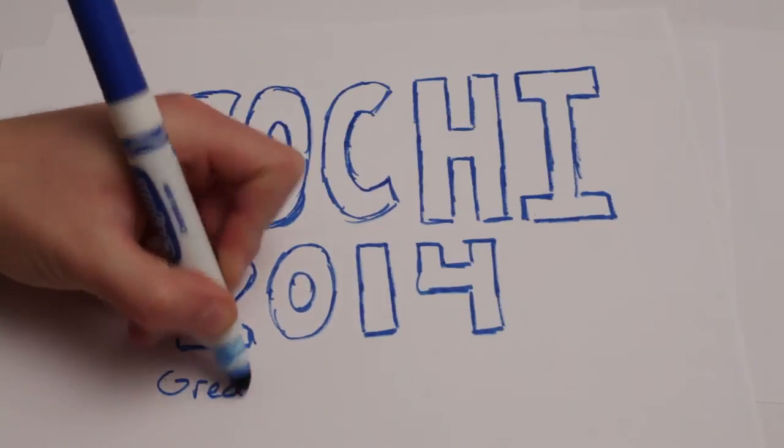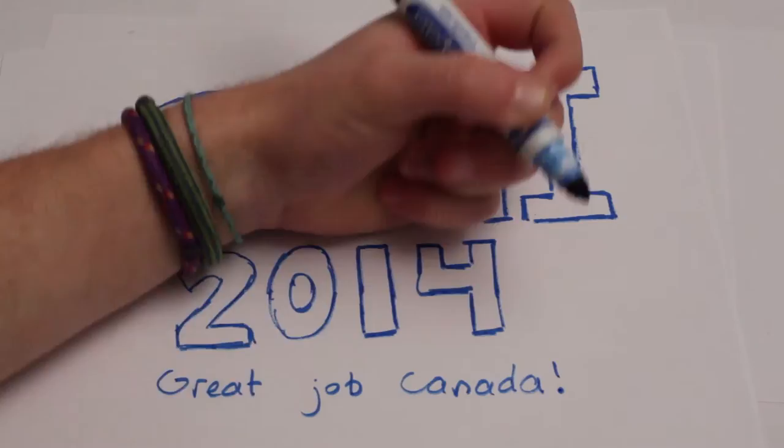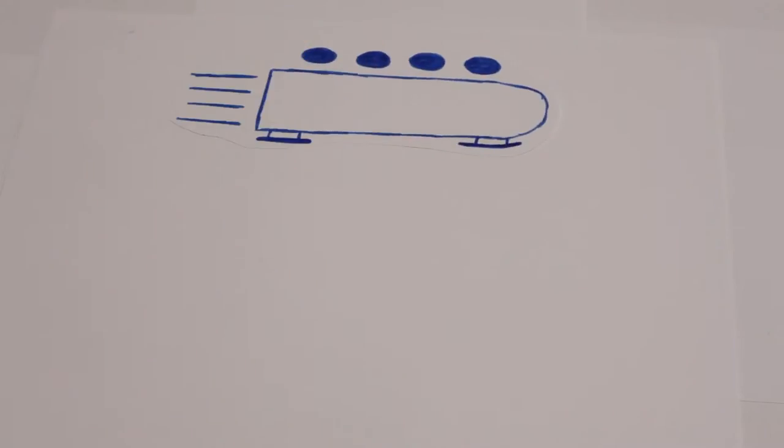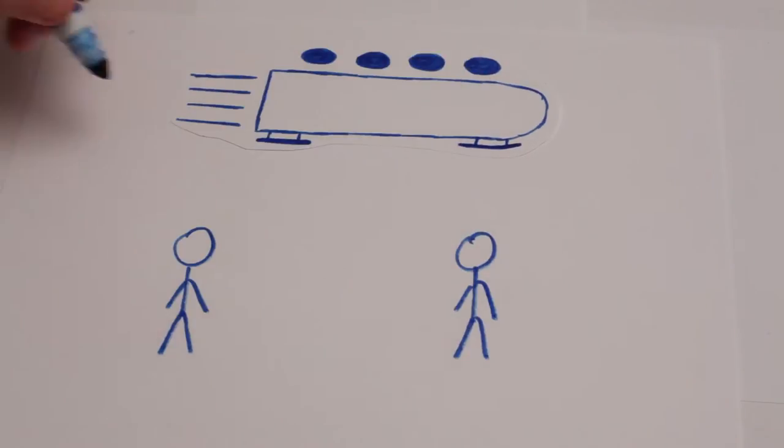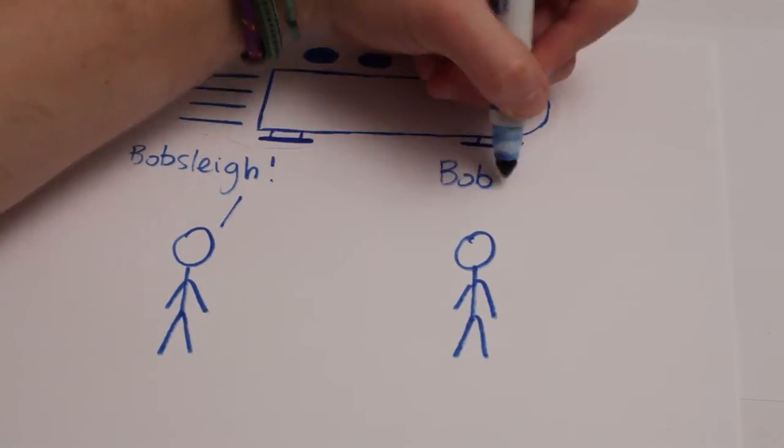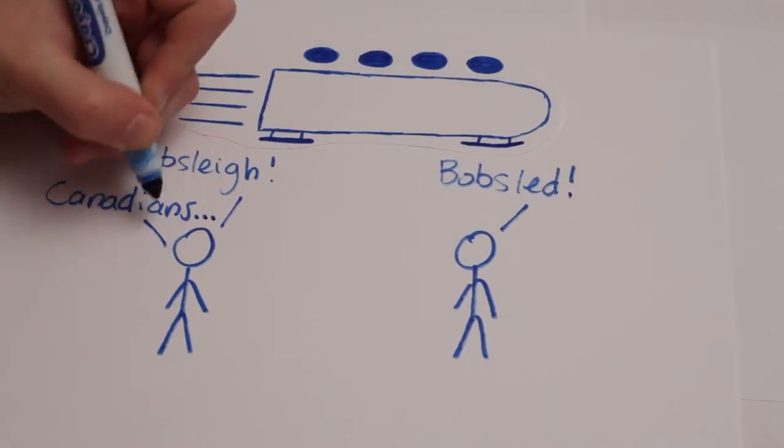Given that the Winter Olympics just finished, I thought an analysis of one of the events would be pretty cool. Although physics is a part of all of the events, we'll be looking at bobsled, which is called bobsleigh everywhere other than Canada and America. Weird.